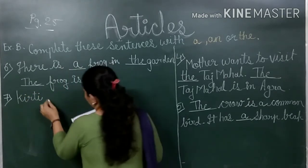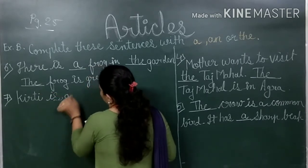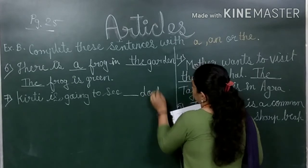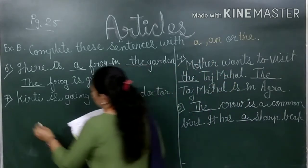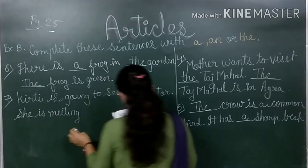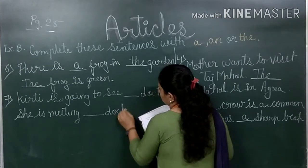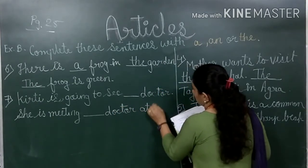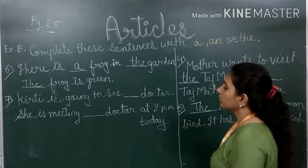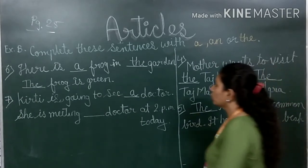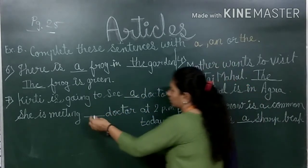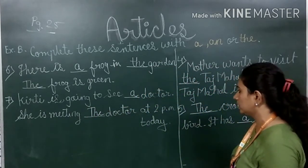Number seven is: Kirti is going to see blank doctor. She is waiting for blank doctor at 2 pm today. 'Doctor' is a common noun used for the first time, so we use 'a doctor'. In the second sentence, we are already talking about that specific doctor, so we use 'the doctor'. Answer: Kirti is going to see a doctor. She is waiting for the doctor at 2 pm.